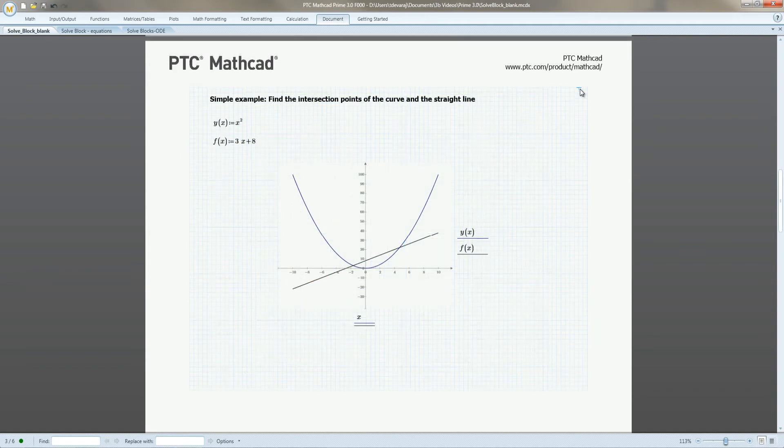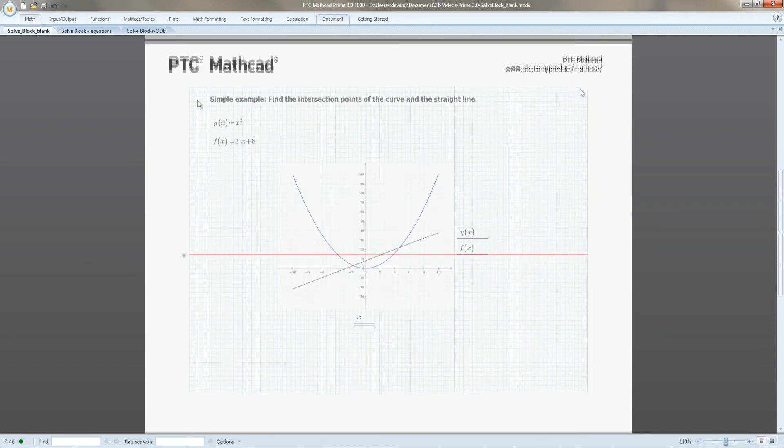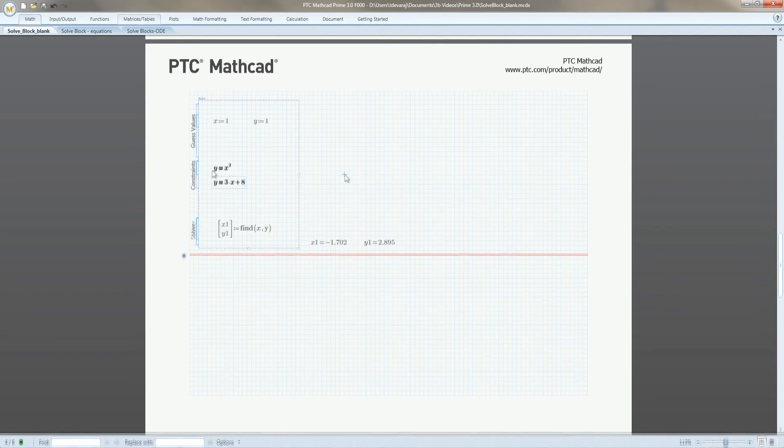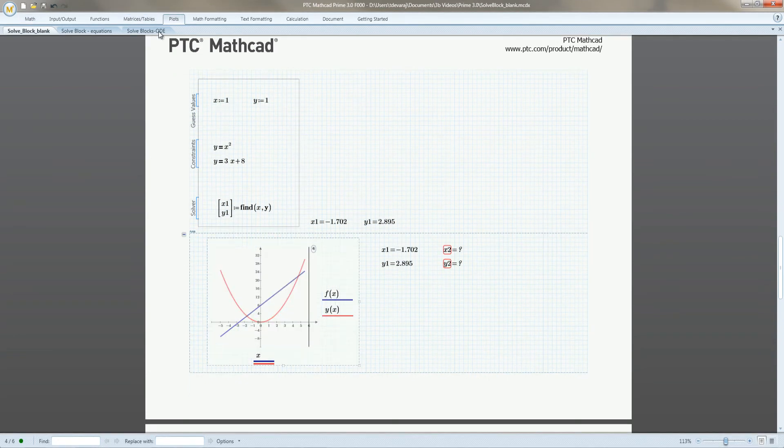To start, let's find the intersection of a parabola and a straight line. We add a solve block and enter the two equations. We plot the results from the solve block and verify the intersection with vertical and horizontal markers.